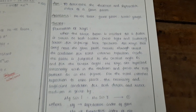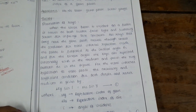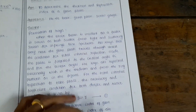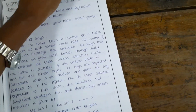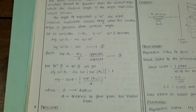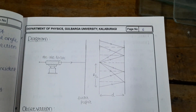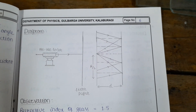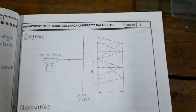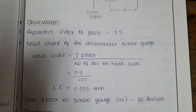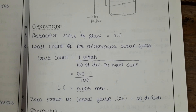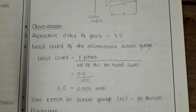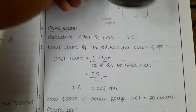This is the stand where we have to keep the glass plate. Just before starting the experiment you should read the theory. I will explain the procedure first — this is the experimental setup diagram. According to that we make the arrangements. These are the observations you should note down: refractive index of glass, which is 1.5, and least count of the screw gauge.